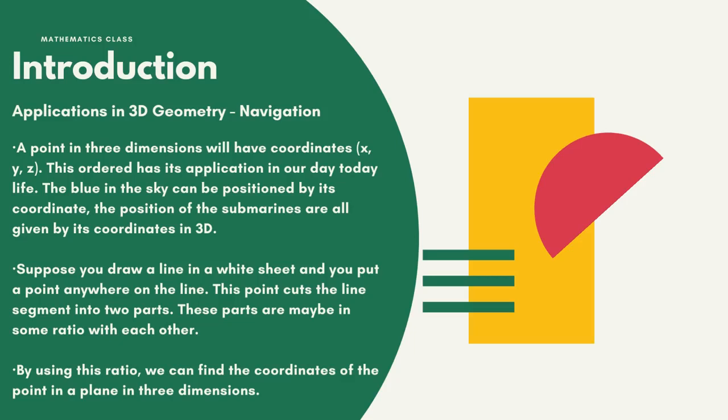The position of submarines are given by their coordinates in 3D. Suppose you draw a line and put a point anywhere on it. This point cuts the line segment into two parts, which may be in some ratio with each other. By using this ratio, we can find the coordinates of the point in a plane in three dimensions.